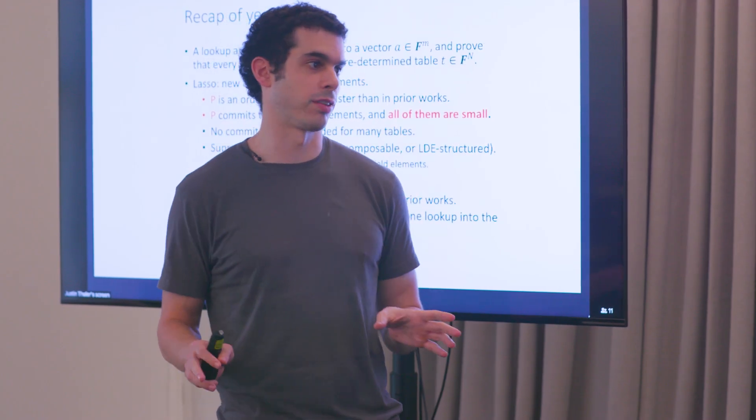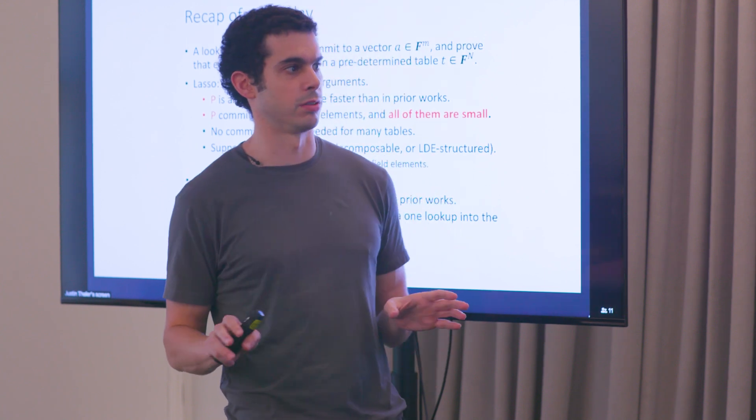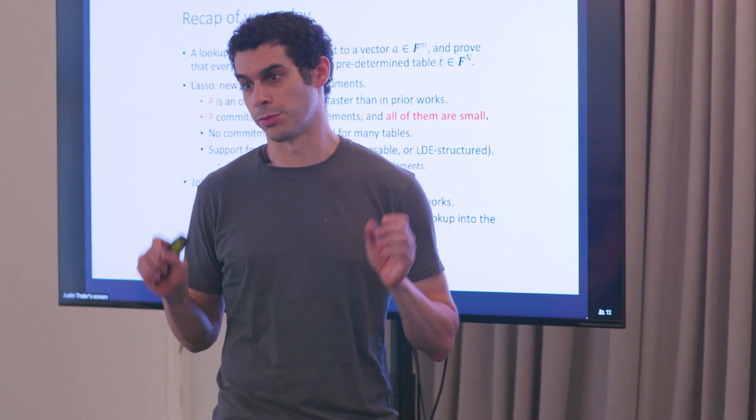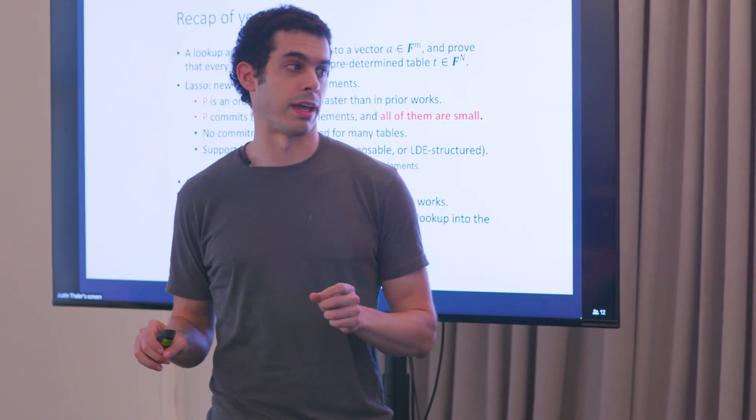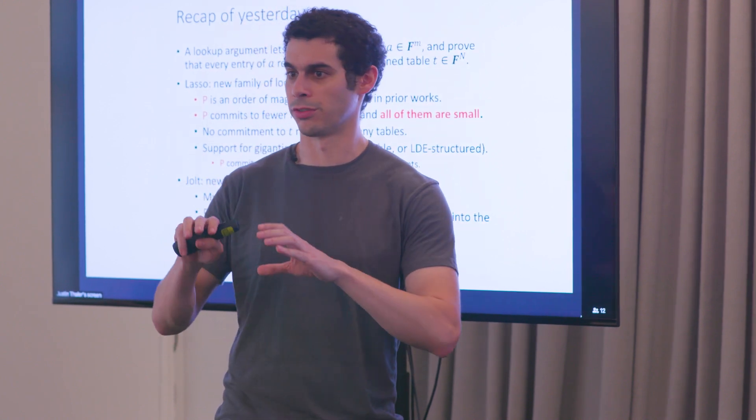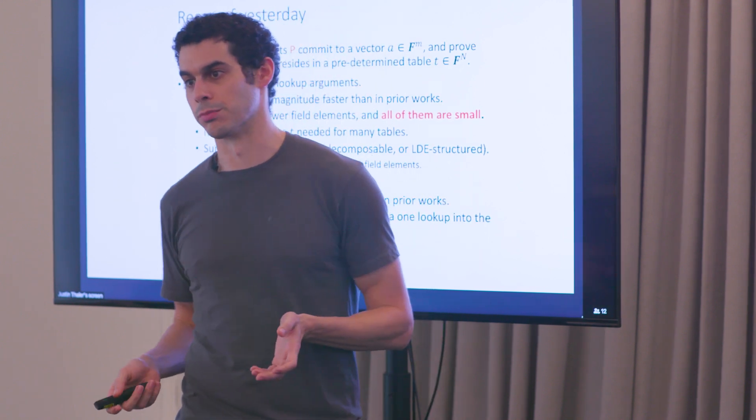Exactly how important that is depends heavily on what commitment scheme you use. But in general, in SNARKs and lookup arguments, the bottleneck for the prover is cryptographically committing to values. And for some really important commitment schemes, if you're committing to small values, even if those small values reside in a very big field, the commitment is really fast to compute.